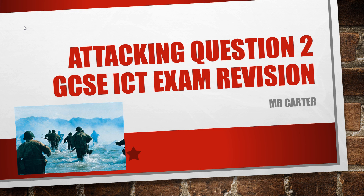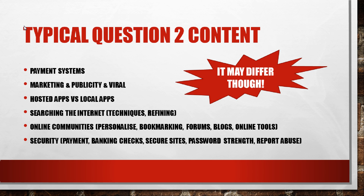Let's have a look at typical question 2 content. I want to put a warning here — it may contain other things — but looking through the last four or five years of papers, they mainly talk about payment systems, marketing, publicity, viral and online marketing, hosted apps versus local apps, searching the internet, Boolean keywords, online communities, personalizing, bookmarks, forums, blogs, online tools, accounts, security, payment, banking, secure sites, and reporting abuse. Overall, this is all about online stuff.